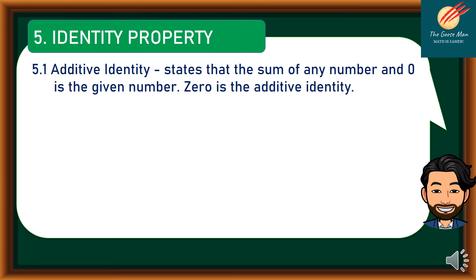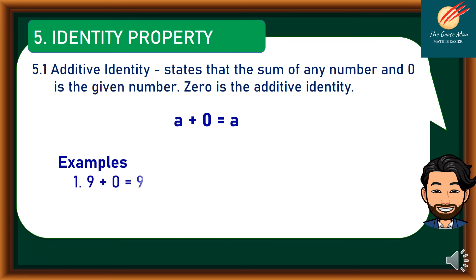Let's move on to the fifth property, which is the identity property. The first type is the additive identity: the sum of any number and 0 is the given number — 0 is the additive identity. In symbols, a plus 0 equals a. Examples: 9 plus 0 equals 9; negative 20 plus 0 equals negative 20; and 567 plus 0 equals 567.